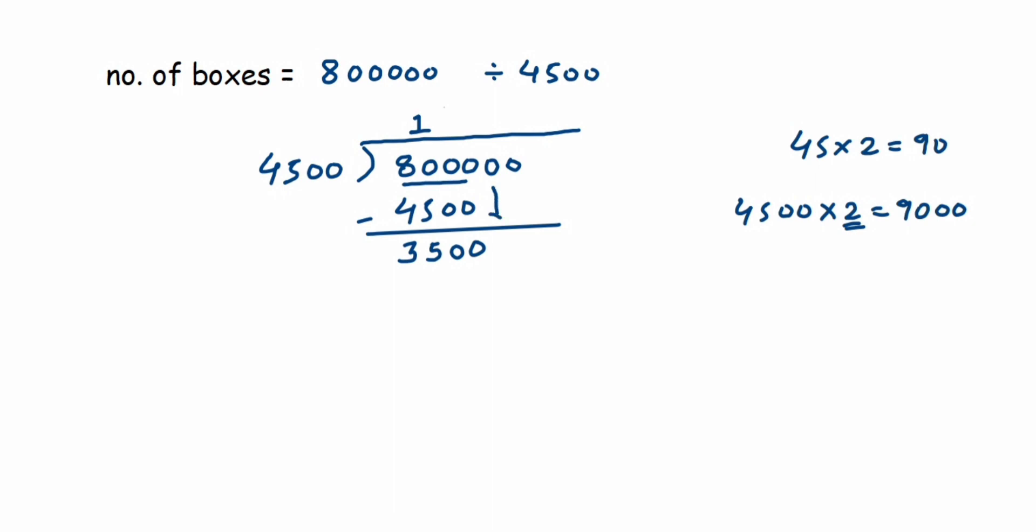We have to just do trial and error method here. We don't know when 4500 goes into 35,000. Let me check: 45 times 6 is - 6 times 5 is 30, 6 times 4 is 24, 24 plus 3 is 27, so it's quite less than 350. I am going to take the next number, that is 45 times 7. 7 times 5 is 35, 7 times 4 is 28, 28 plus 3 is 31, so 315. Now this is closer to 350.